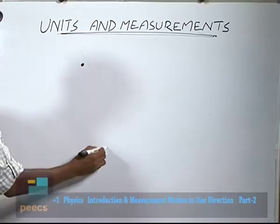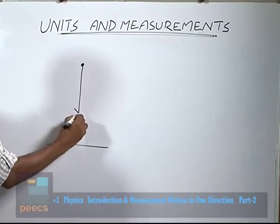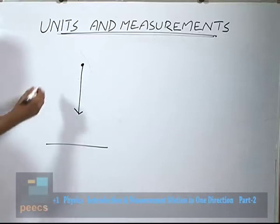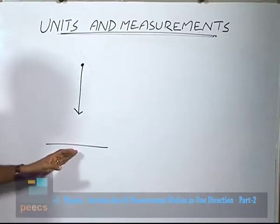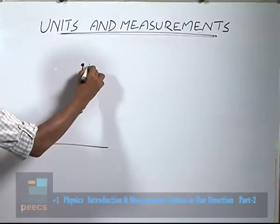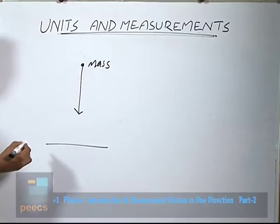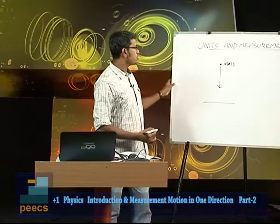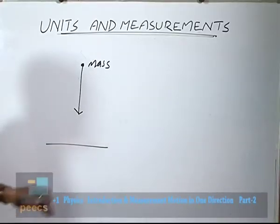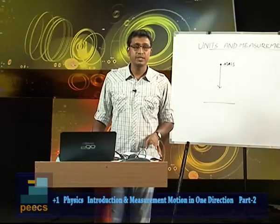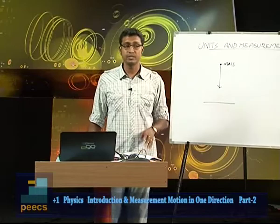Many natural phenomena are familiar to us. Take the simple example of a freely falling body. An object is at a certain height and it is freely falling from that height — this is a natural phenomenon. To understand it, we want to measure the mass of the object, the time taken to reach the ground, and the height from which it is falling. These quantities — mass, time, and height — are measurable quantities. Such quantities that can be measured are known as physical quantities, and there are many: mass, time, length, luminous intensity, viscosity, force, et cetera.